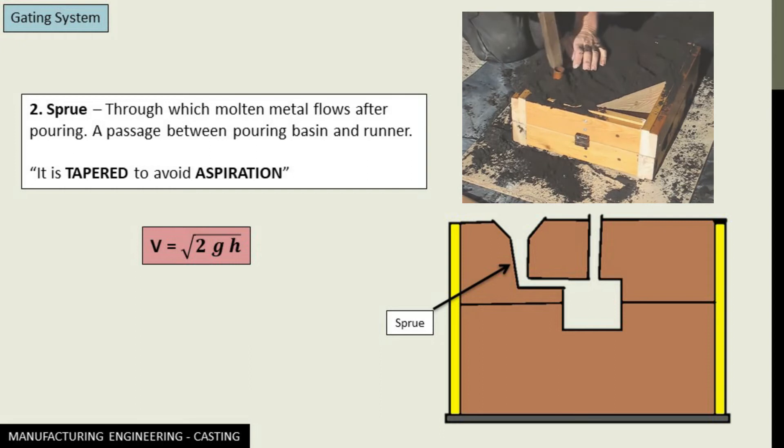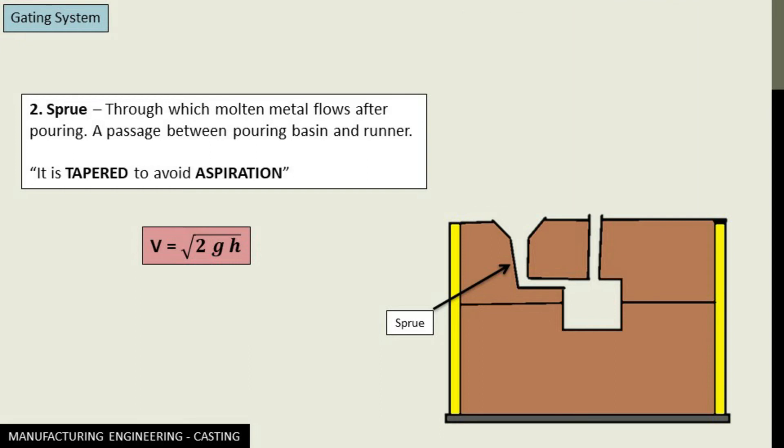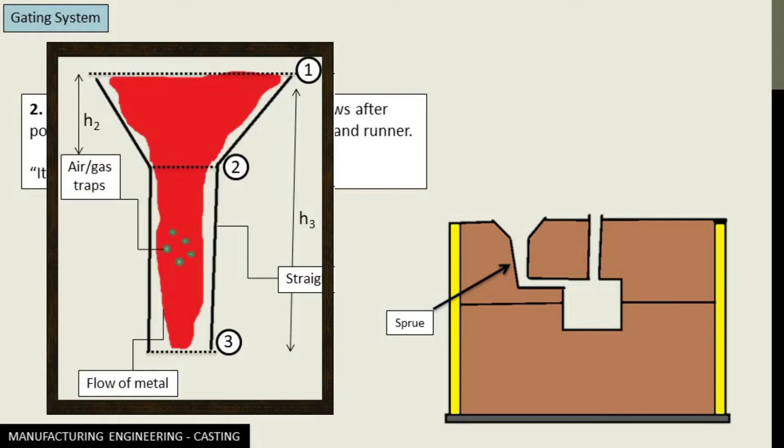The reason for its tapering is to avoid aspiration effect. Now what is this aspiration effect? Let's suppose when the passage is blank and the molten metal is just started pouring, what will happen if it is not tapered, if it is in a straight line?